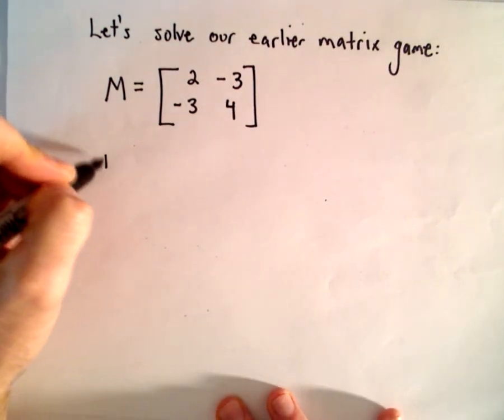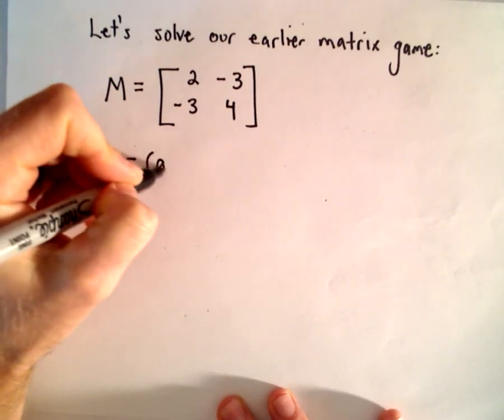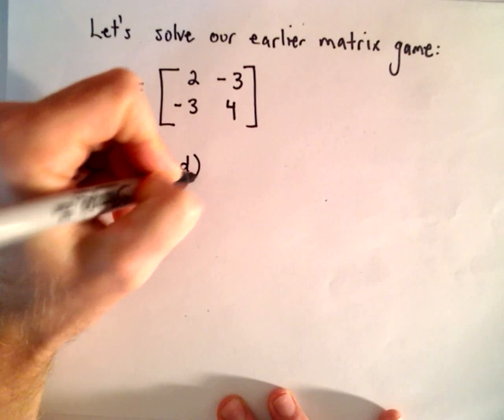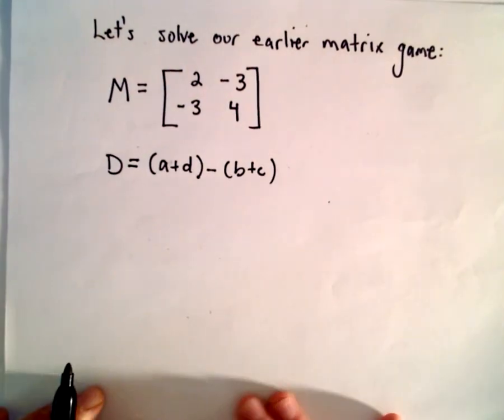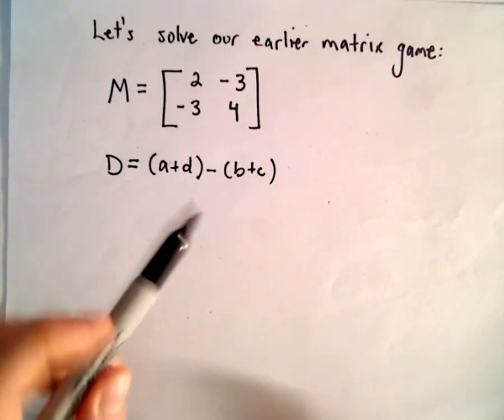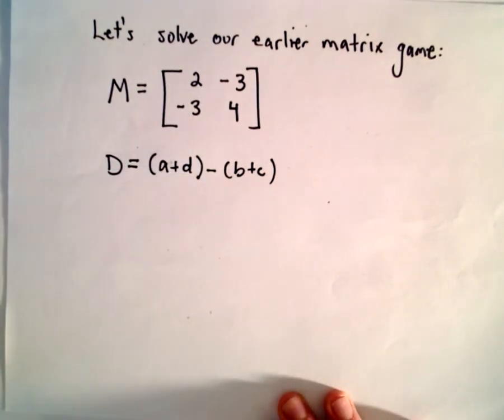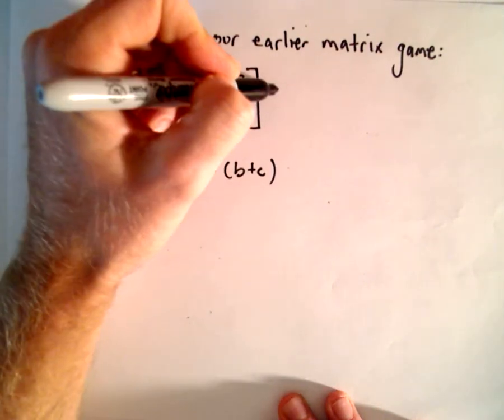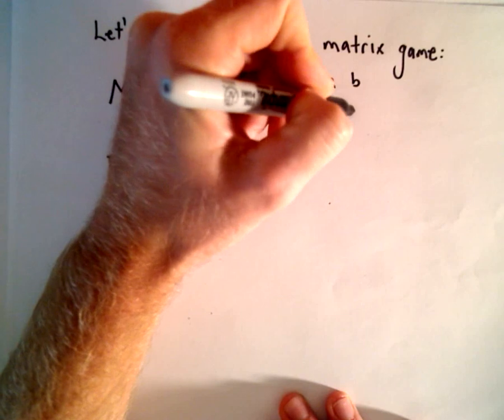So the first thing I'm going to do is calculate our value for capital D. And that's given by A plus D minus B plus C. You can actually show for a determined game, a game with a saddle value, that this value always equals zero. I'm not going to justify that, but I just want to point that out. So let me label again. This is A, B, C, and D.